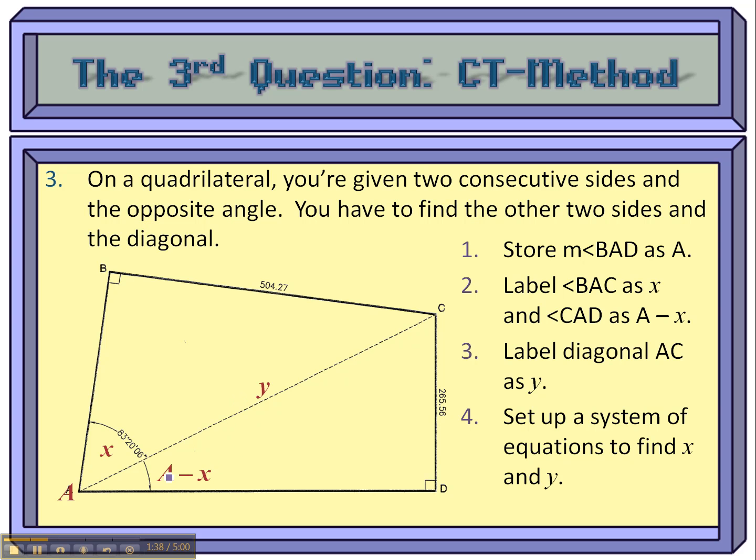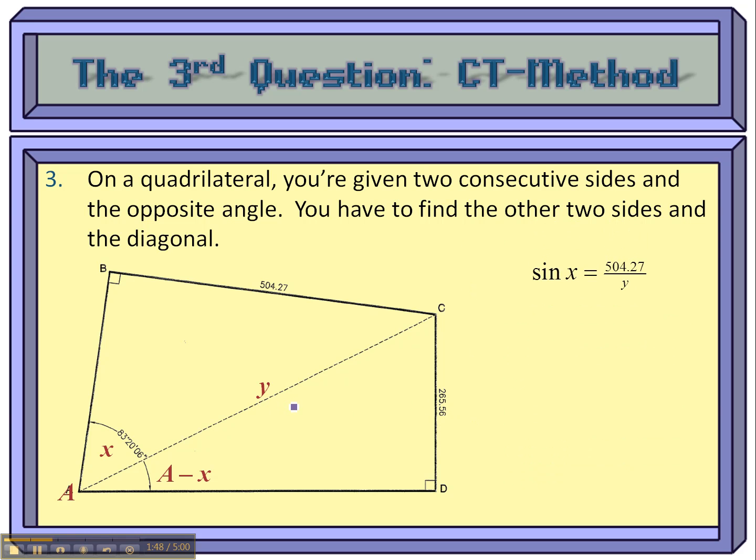Look down at the bottom. The angle that I'm given, A minus X, is directly opposite the opposite side, and we have the hypotenuse, so it's sine again. So here are two equations: sine X equals the opposite side, which is the top, over Y, and sine of A minus X equals the right side over Y.